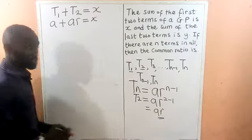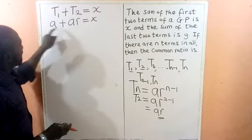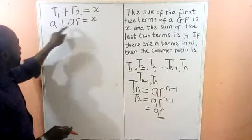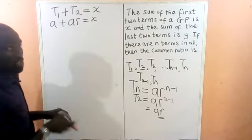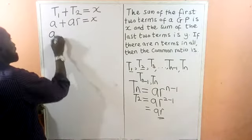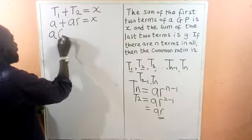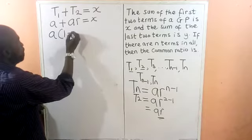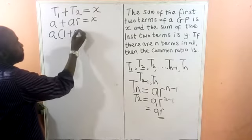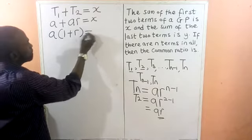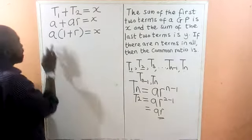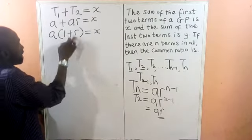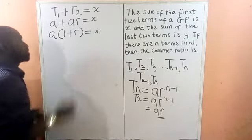We can factor out A: A times open bracket 1 plus R equals X. So A times 1 gives A, and A times R gives AR. This is Equation 1: A(1 + R) = X.